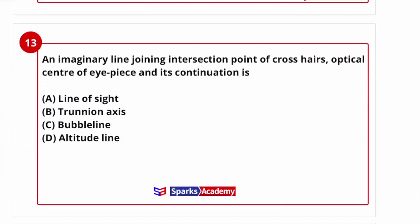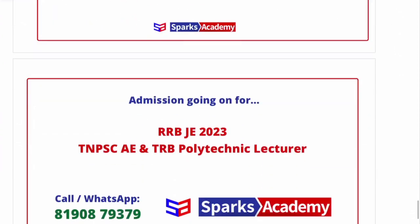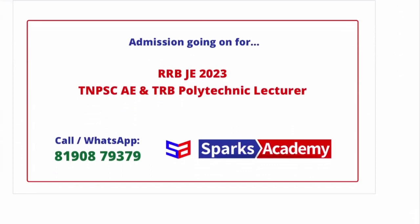Next question: an imaginary line joining the intersection point of crosshairs, optical center of the eyepiece, and its continuation is called what? Options are: line of sight, trunnion axis, bubble line, and altitude line. The answer relates to the crosshair and eyepiece — try answering in the comments section. This is a question discussion video for RRB JE, TNPCAE, and TRB exams. Course details and packages are available. Thanks for watching.